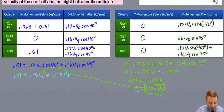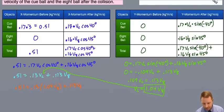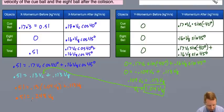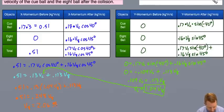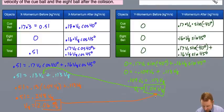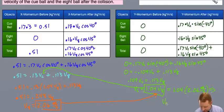Substituting vc equals 1.04 v8 into the x-momentum equation: 0.51 equals 0.13 times 1.04 v8 plus 0.113 v8. Combining terms, 0.51 equals about 0.248 v8. Solving for v8 by dividing both sides by 0.248, I get a velocity for the 8 ball of 2.06 meters per second. Then vc equals 1.04 times 2.06, giving a cue ball velocity of 2.14 meters per second.